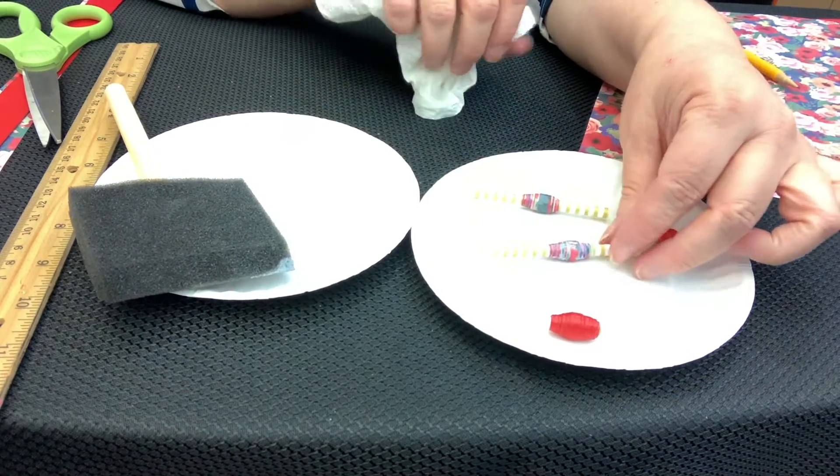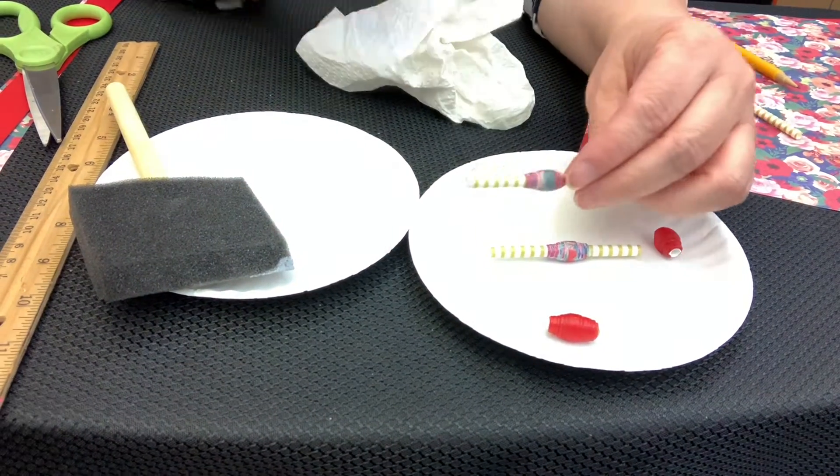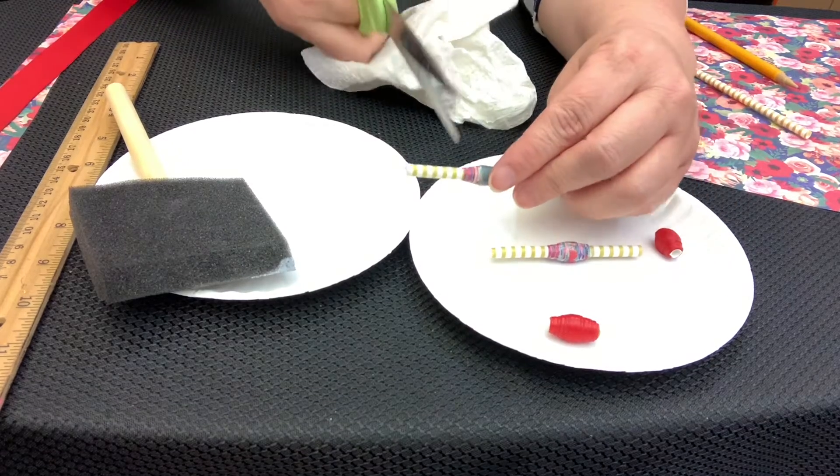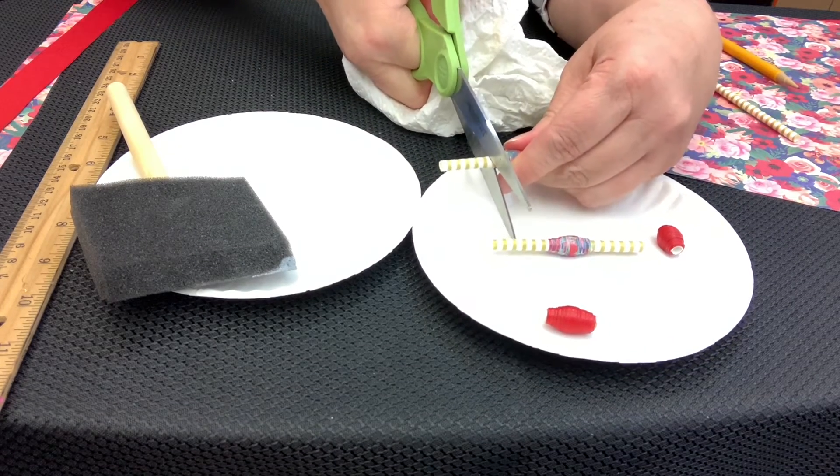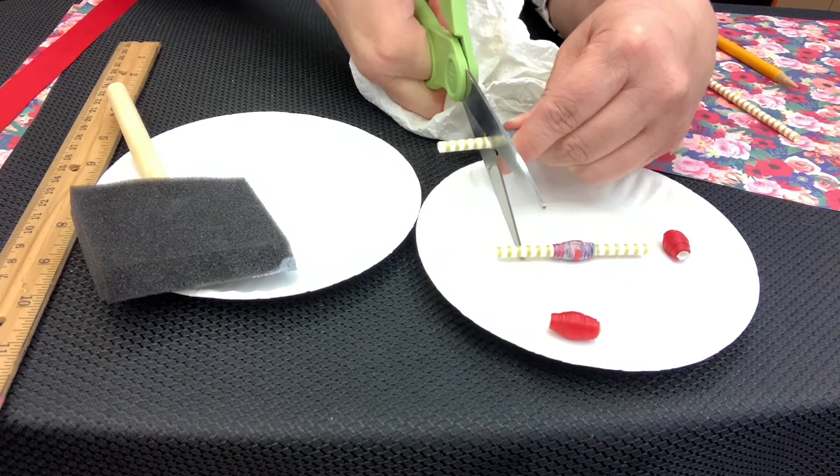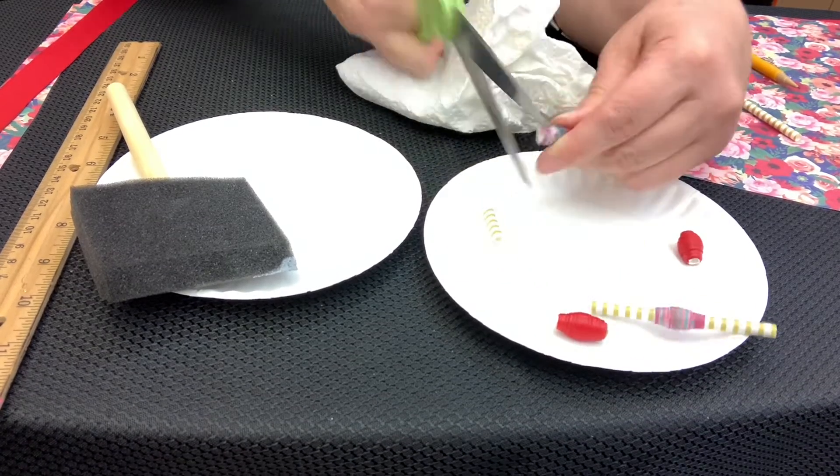And while that's drying, we can take one that's already ready and dry and we cut off the excess straw on each side. Get as close to the paper as possible. Cut off one end.